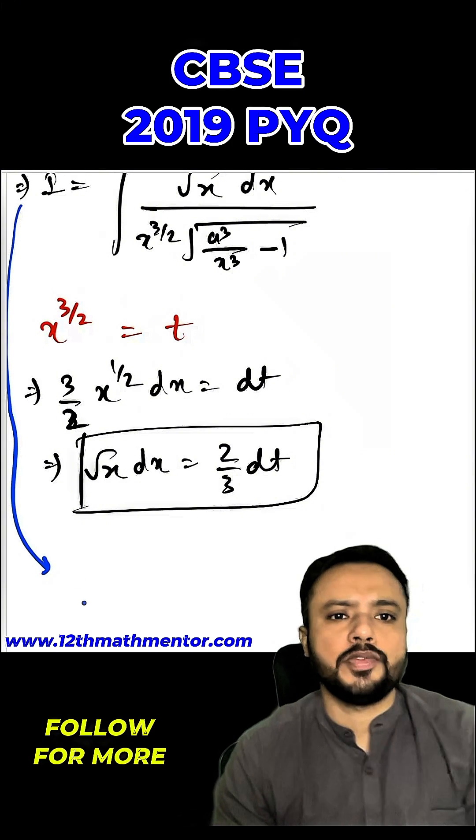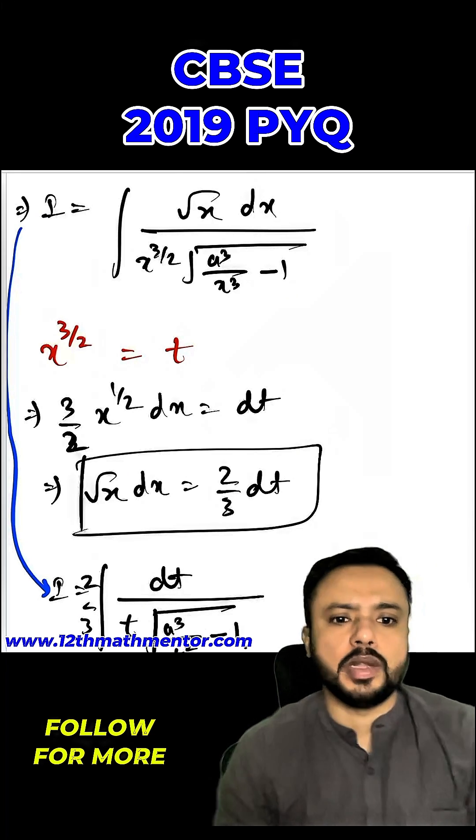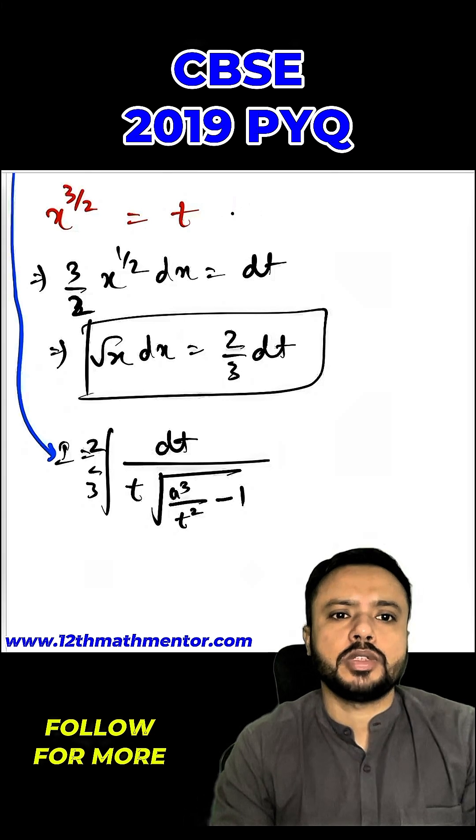Now I am going to rewrite this integral in terms of t, so 2 by 3 will come out of the integral. Root x dx can be replaced by dt upon x raised to the power 3 by 2, which is t, root of a cube upon t square minus 1, since my x raised to the power 3 by 2 equals to t.